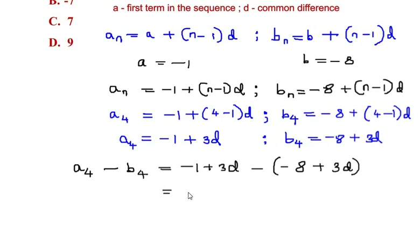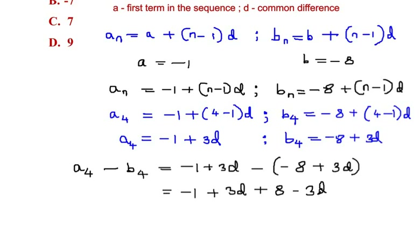Simplifying: negative 1 plus 3d, then opening the bracket — negative of negative 8 is positive 8, and negative of positive 3d gives negative 3d. The positive 3d and negative 3d cancel each other out, leaving negative 1 plus 8, which equals positive 7. So the difference between the fourth terms is 7.